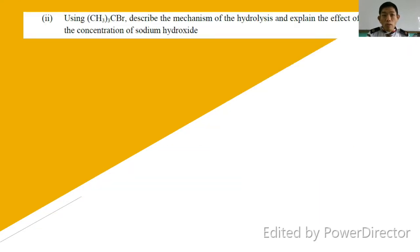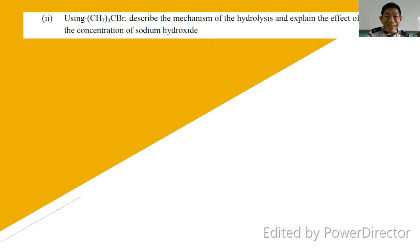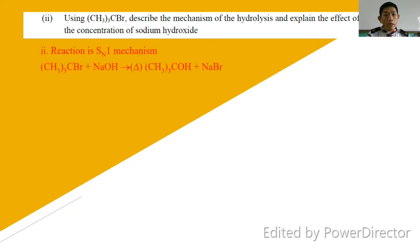Then we have question 1b2: using C(CH3)3Br, describe the mechanism of hydrolysis and explain the effect of increasing concentration of sodium hydroxide. Only in this question are you asked to specifically describe the mechanism and explain the effect. Since it is a tertiary haloalkane, you are going to use the SN1 mechanism. You must be able to write the general reaction for the hydrolysis.